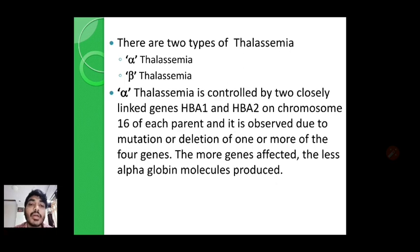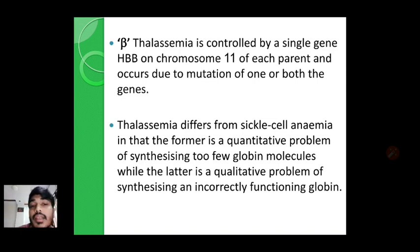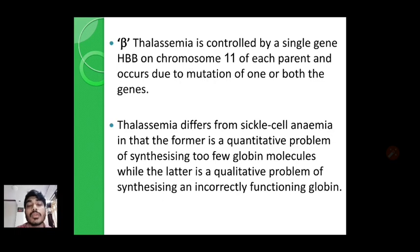For alpha thalassemia, remember the two genes HBA1 and HBA2, both located on chromosome number 16. For beta thalassemia, the gene responsible for synthesis of beta globin protein is HBB, located on chromosome number 11. If any mutation or deletion occurs in the HBB gene, it directly affects the rate of synthesis of the beta globin chain. Beta thalassemia is controlled by the single gene HBB on chromosome 11 and occurs due to mutation of one or both copies of the gene.